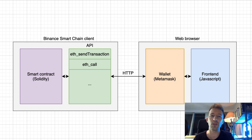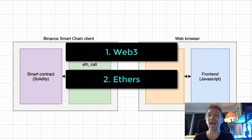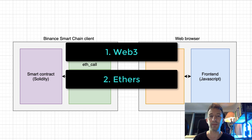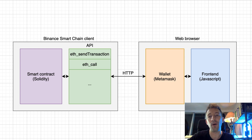We could use JavaScript directly to interact with the API of Binance Smart Chain, but it would be too much work. The two endpoints we are going to use — eth_sendTransaction and eth_call — require a specific encoding for the parameters, and it would be too much of a hassle. Instead, we are going to use a JavaScript library to do the heavy lifting. There are two options: web3 and ethers. Web3 is older; ethers is newer, has a simpler API, and is getting way more traction. So we will use ethers, but it doesn't matter if later you prefer to use web3. Ethers is going to send an HTTP request across the internet to the API of Binance Smart Chain, which will be processed by the EVM, and finally a response is sent back to the front-end.